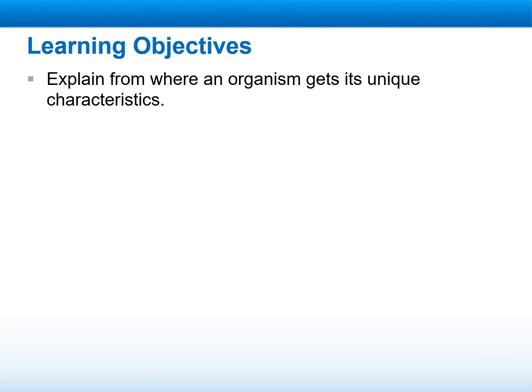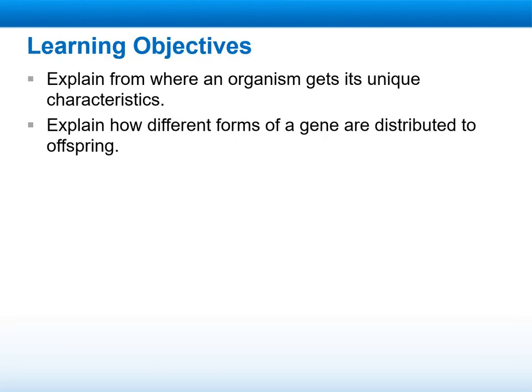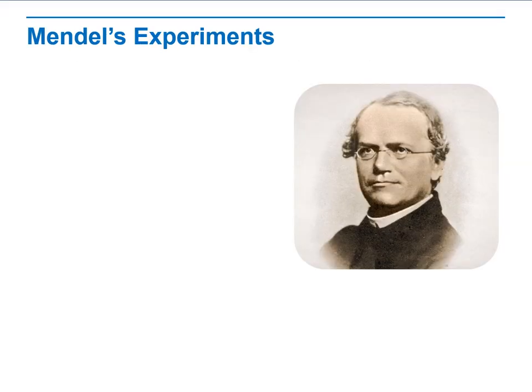In this lesson, I will explain where an organism gets its unique characteristics from and explain how different forms of genes are distributed to the offspring. First of all, we will talk about the scientist who is behind all of this, which is Gregor Mendel.